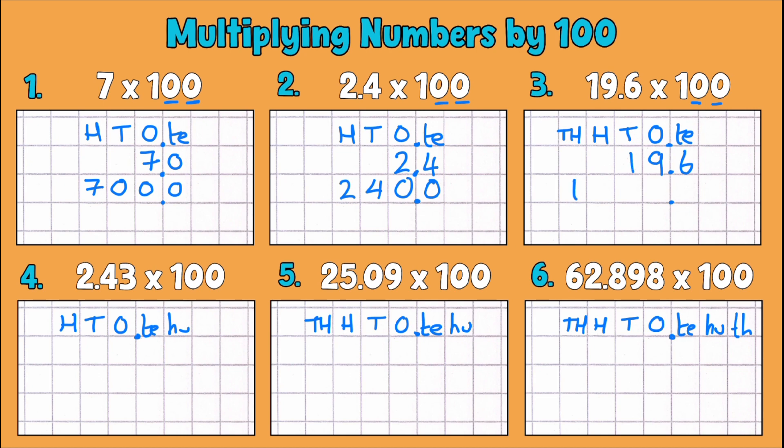So our 10, 1, 2 becomes a thousand. Our 9 becomes 900. Our 0.6 becomes 60 and we've got nothing else so we can put in the placeholder. So 1,960 or 1,960.0.